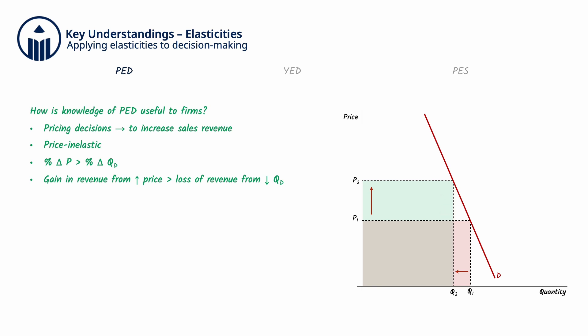is greater than the loss of revenue from the resulting decrease in quantity demanded, which is this box here. On the diagram, we can see that P2Q2 is greater than P1Q1.